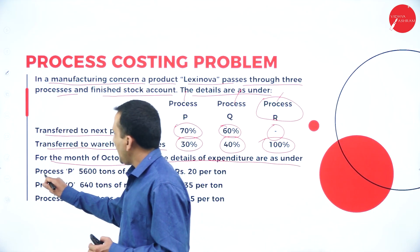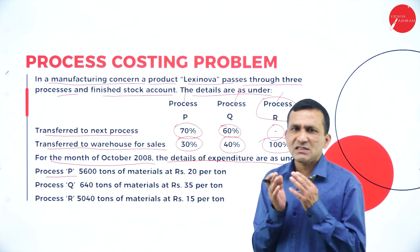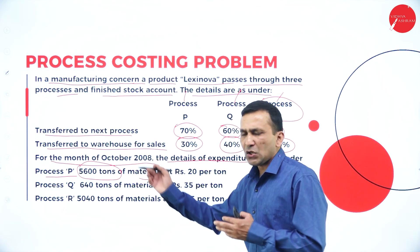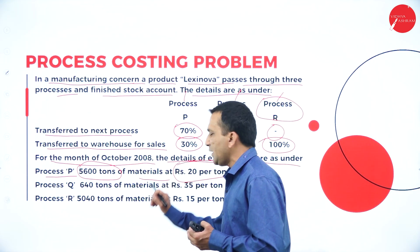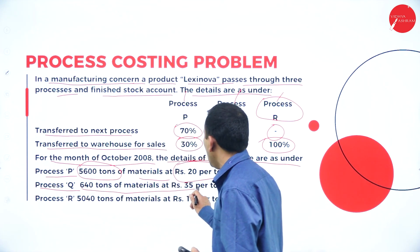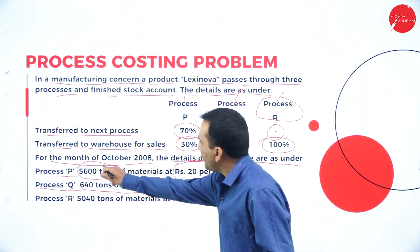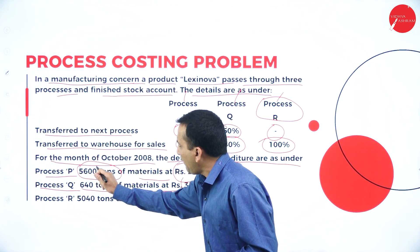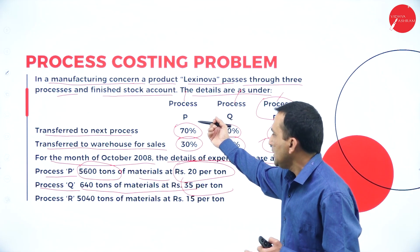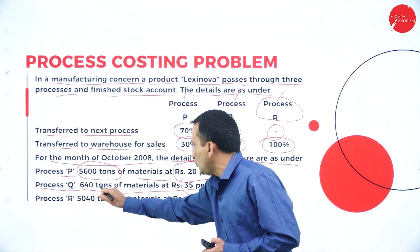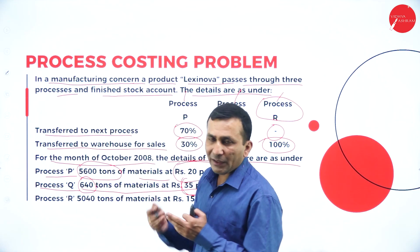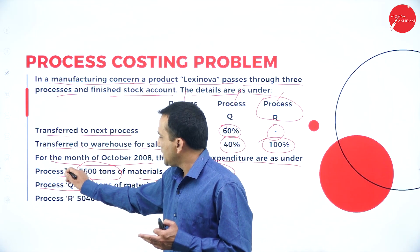For the month of October 2008, the details of expenditure are as under. In Process P, the input introduced is 5,600 tons of material at the rate of ₹20 per ton. In Process Q, 640 tons of material are introduced at the rate of ₹35 per ton. Whatever is transferred from Process P goes to Process Q as input, and we also add 640 tons at ₹35 per ton.